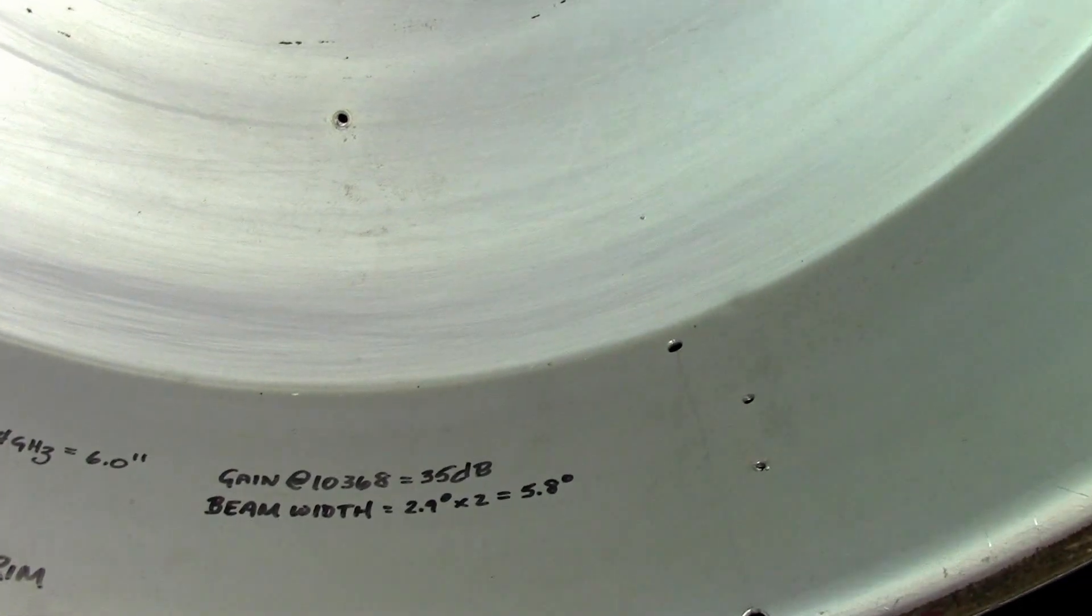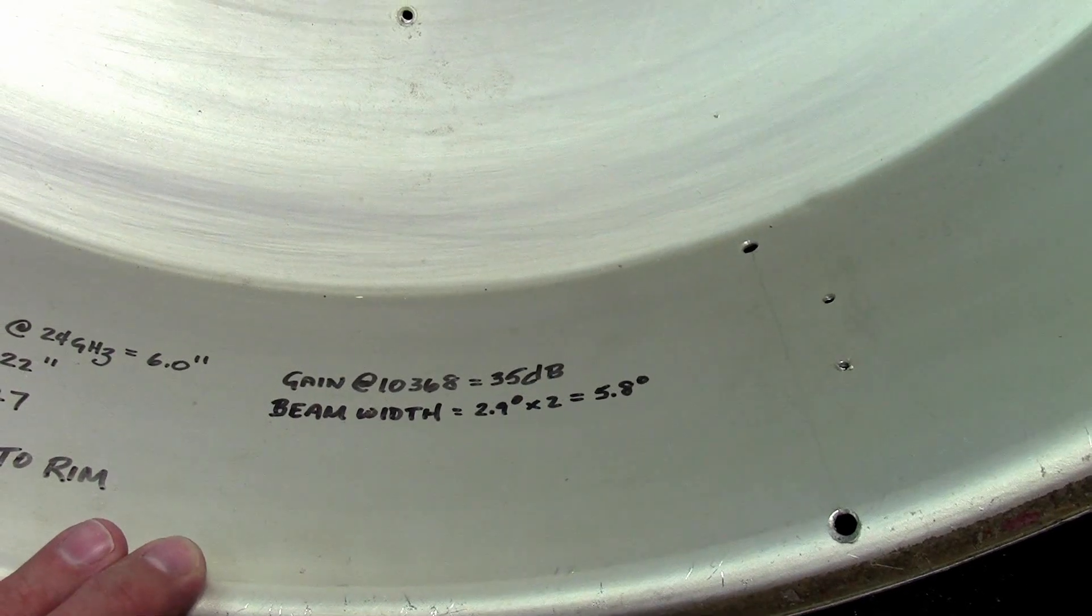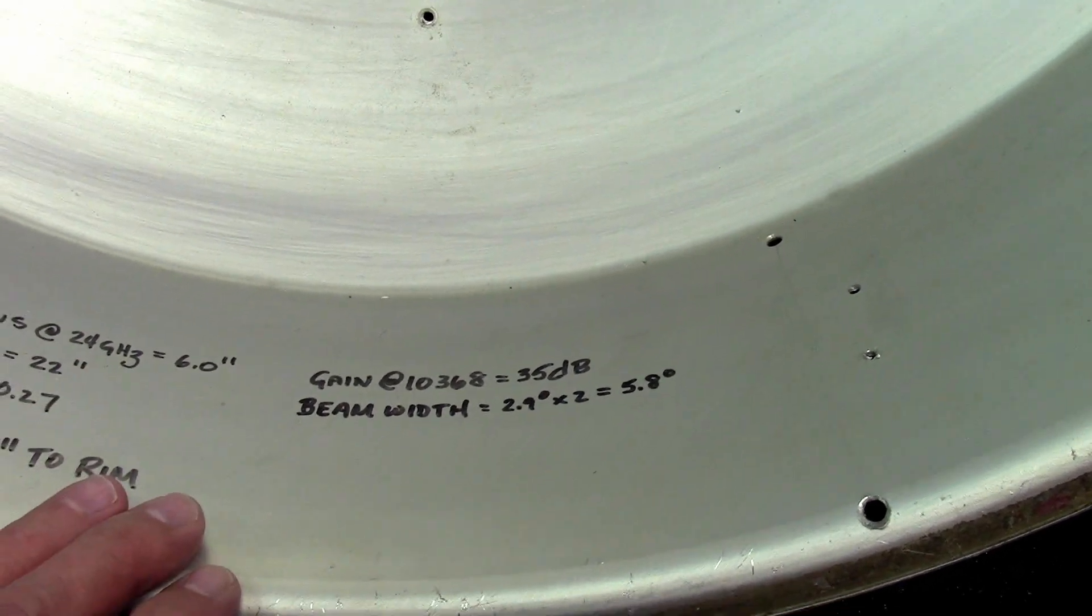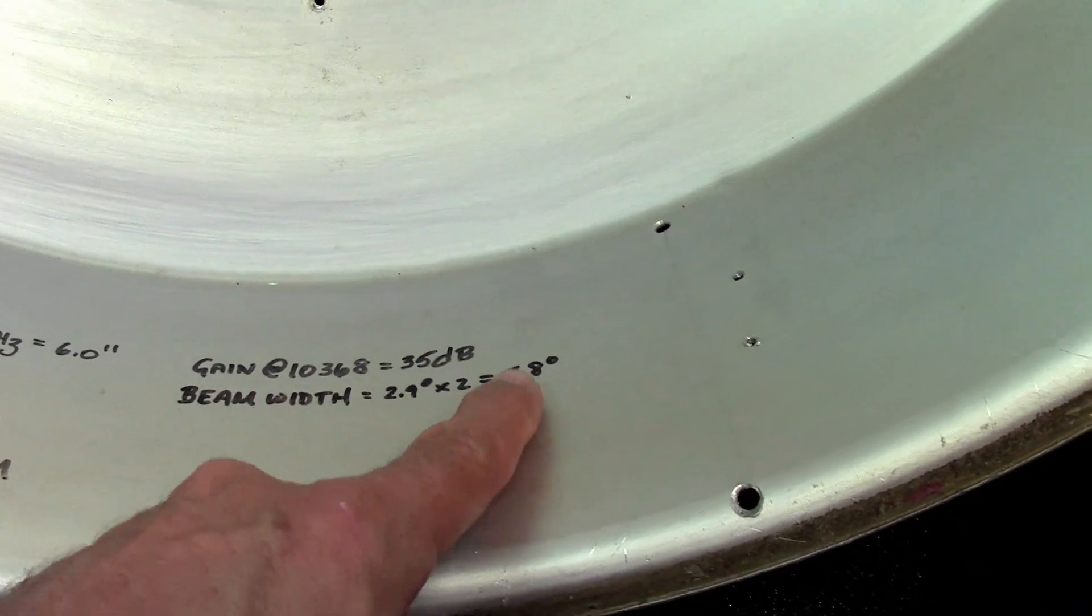That's a lot of gain, so maybe it will compensate for the weaker power that we normally use. And the beam width end to end is 5.8 degrees.